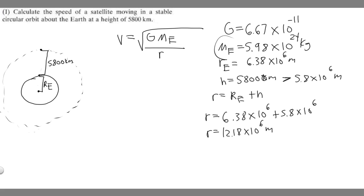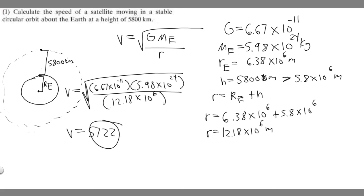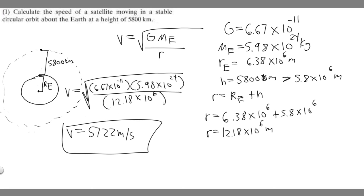We have the radius, the mass of the planet, and the gravitational constant, so we can go ahead and solve. Velocity equals the square root of G — 6.67 times 10 to the minus 11 — multiplied by the mass of the Earth, 5.98 times 10 to the 24, all divided by our radius of 12.18 times 10 to the 6th meters. If you solve this, you should get about 5,722 meters per second. The answer may differ slightly depending on which constants you use, but this is approximately your answer.